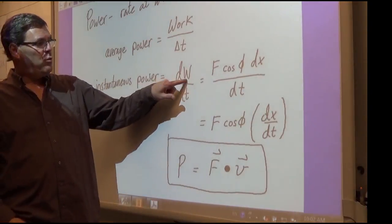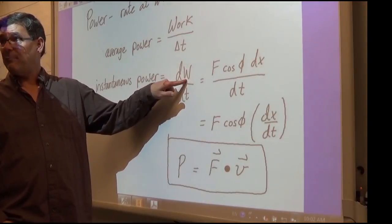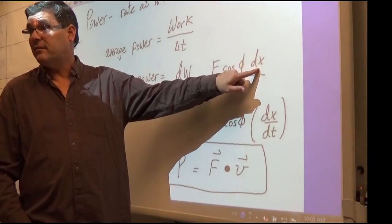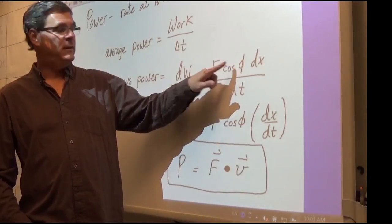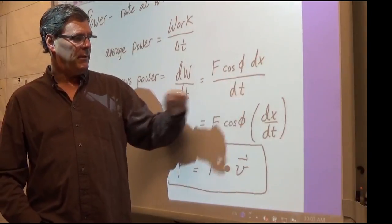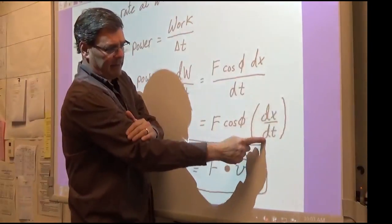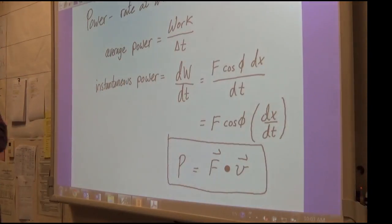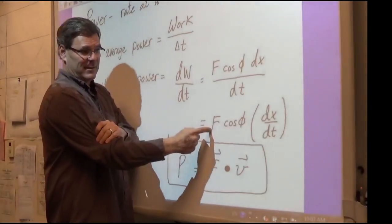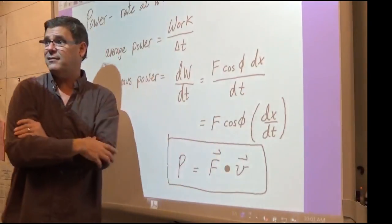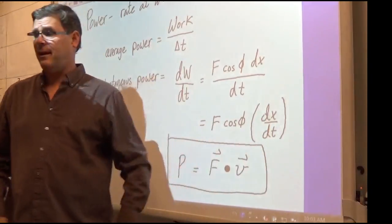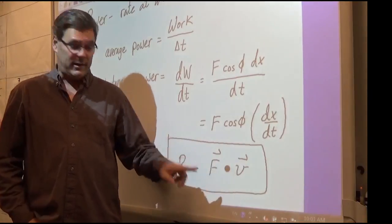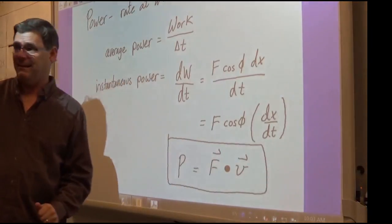We know that work, using the dot product of force and displacement, is force times dx times the cosine of the angle between them. I can group dx and dt together and recognize dx/dt as velocity. So power is the dot product of force and velocity — force times velocity times the cosine of the angle between them. Power is the dot product of force and velocity.